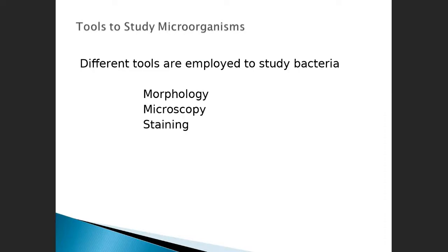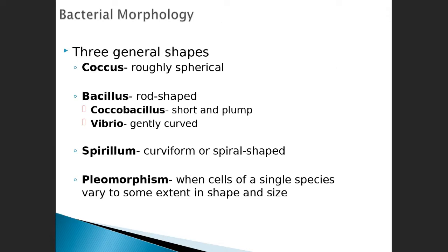Before we go there, we have to talk about tools. The three tools we're going to talk about are morphology — shape and structure — microscopy, and staining. We start with bacteria because they're easy. There are three shapes: coccus, which are round structures; bacillus, which are elongated structures; and spirillum. The spirillum sometimes looks like an S, sometimes like those birds you drew in grade school, and sometimes elongated and tightly helically coiled — we call those spirochetes.